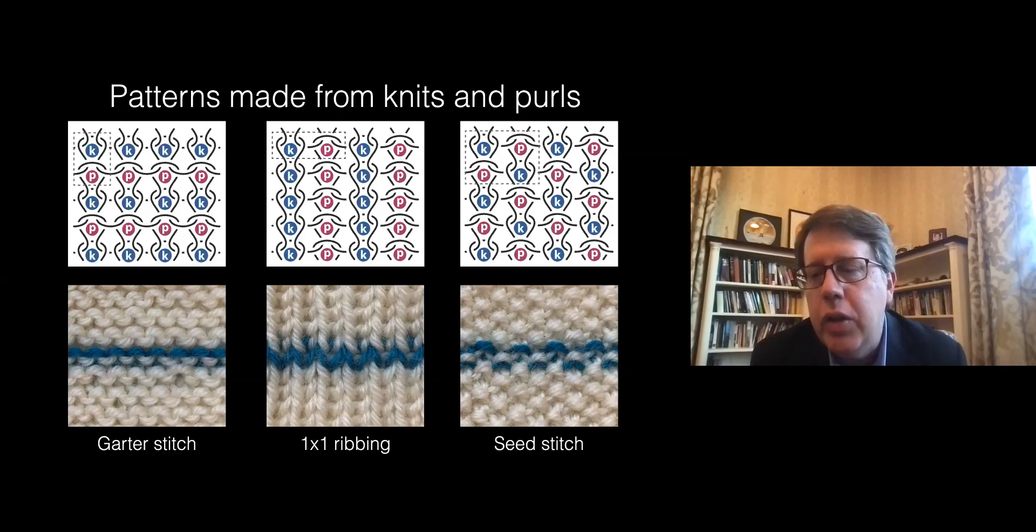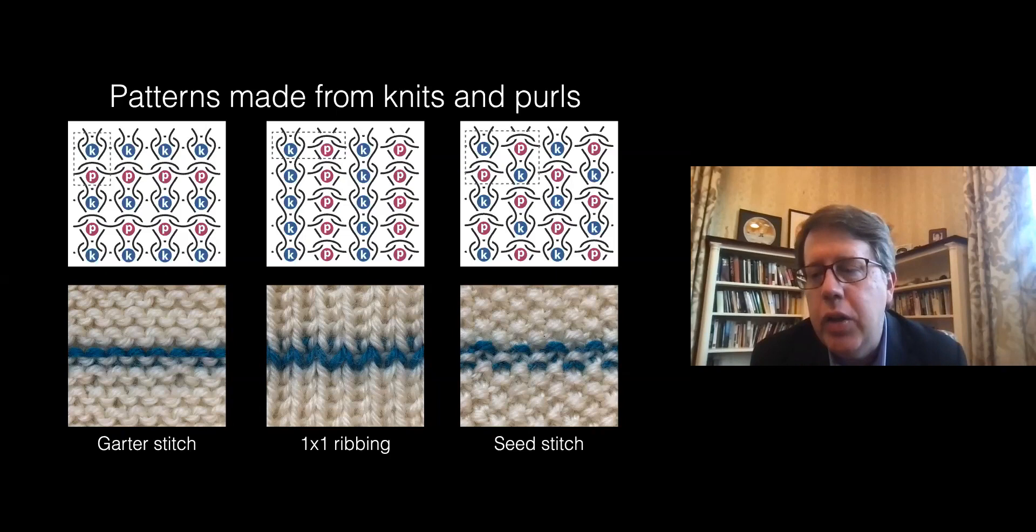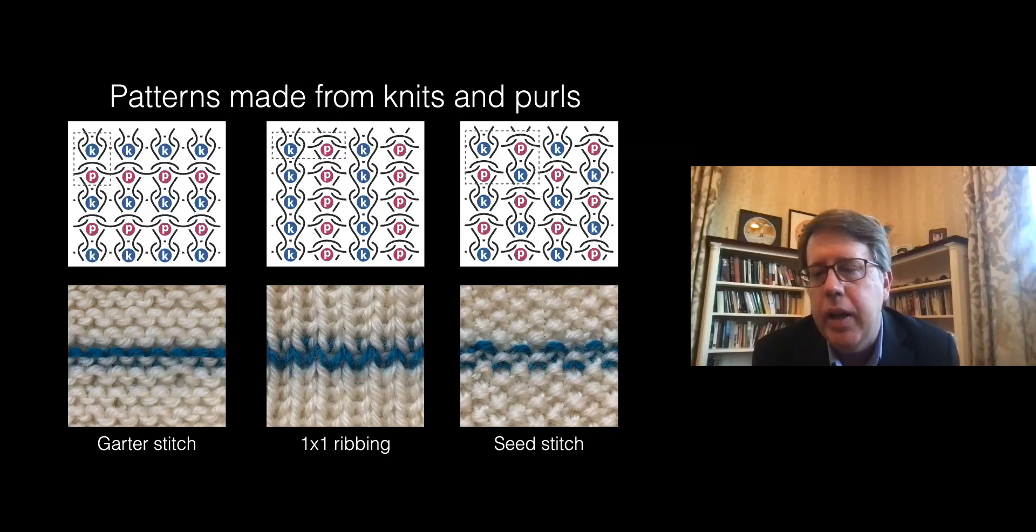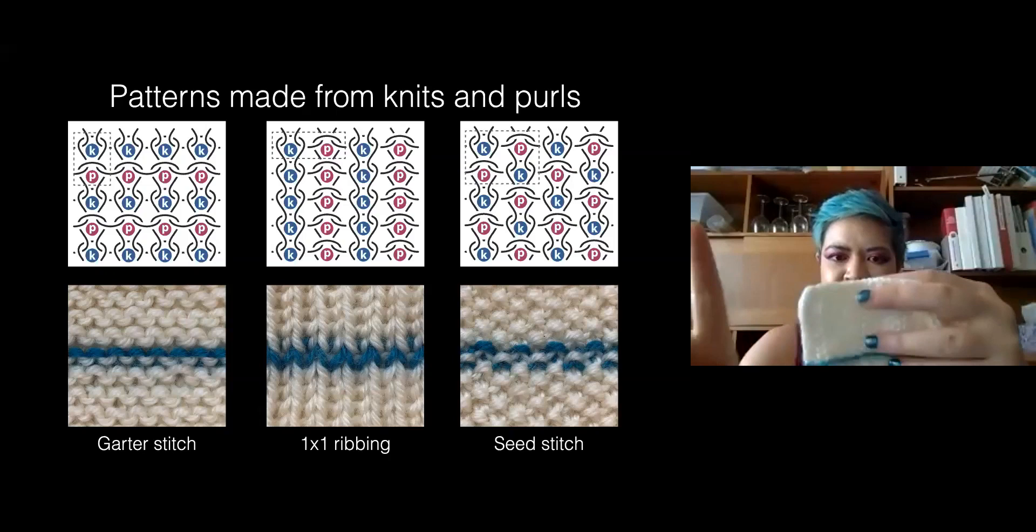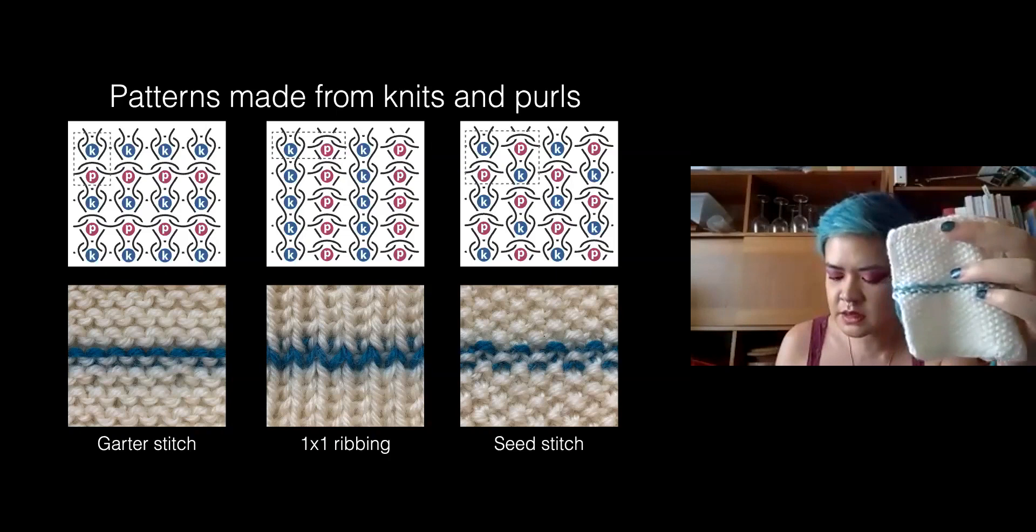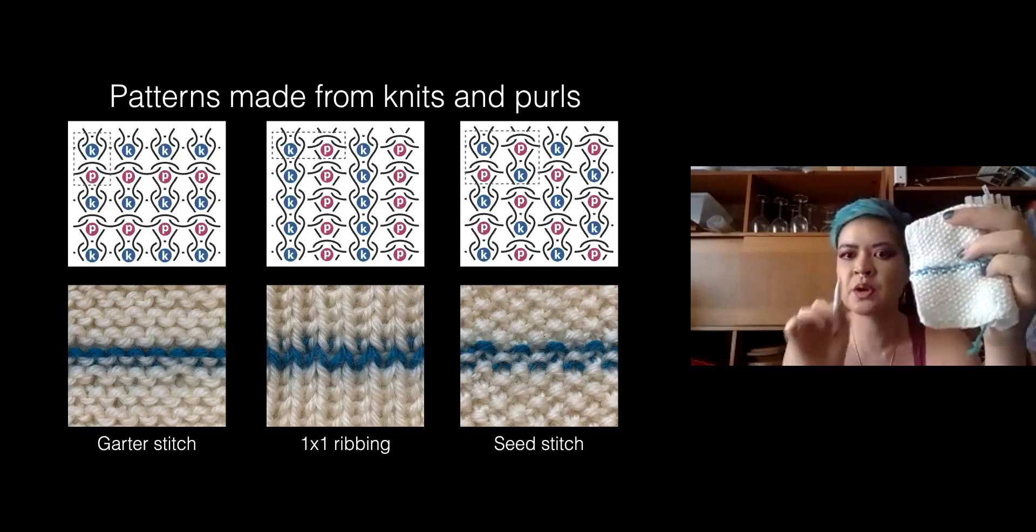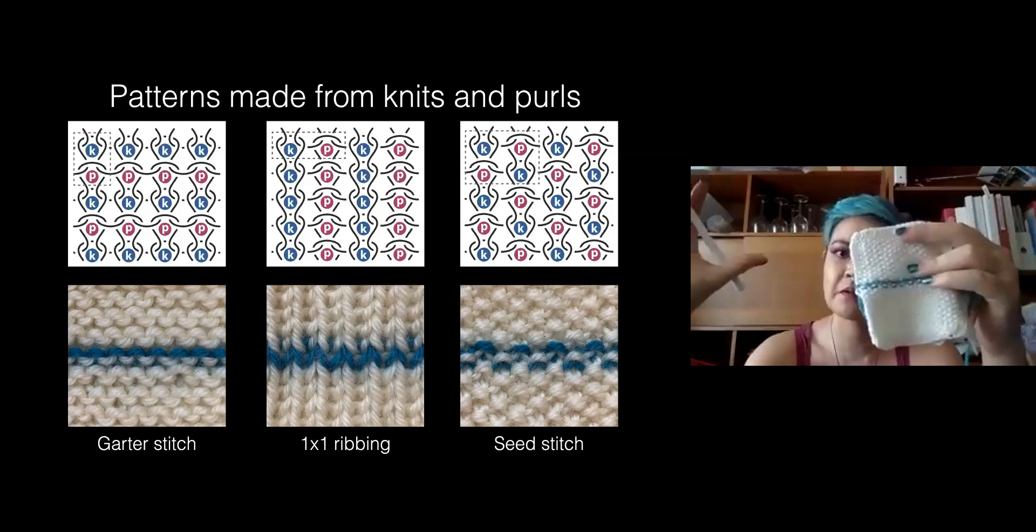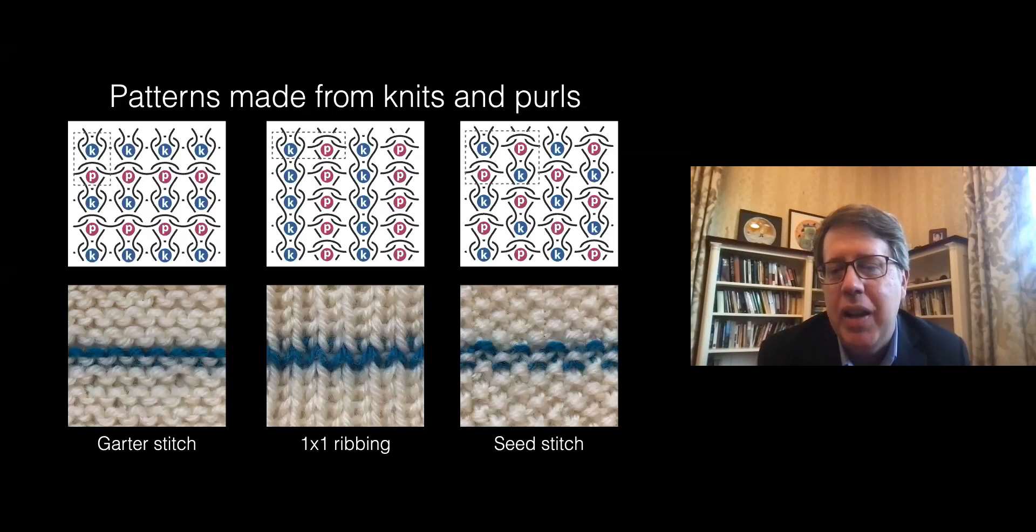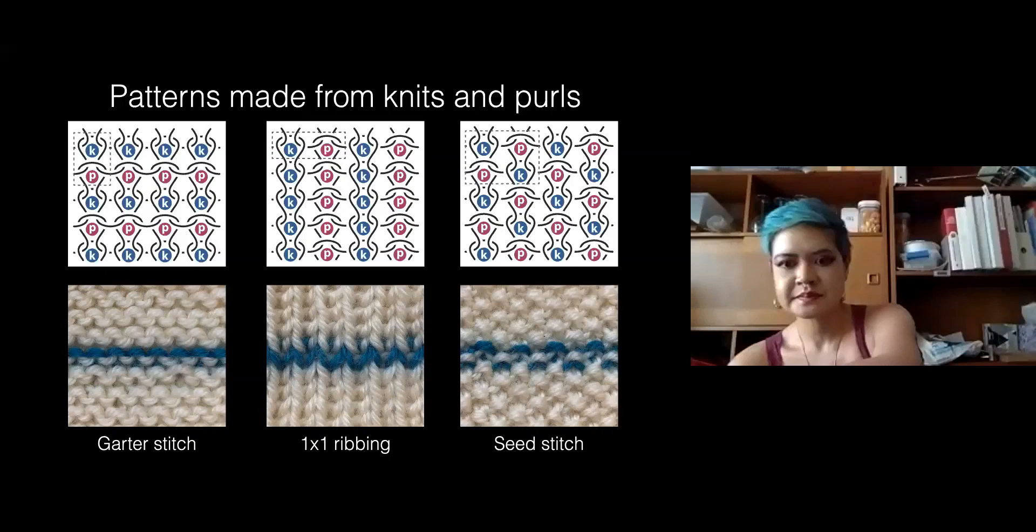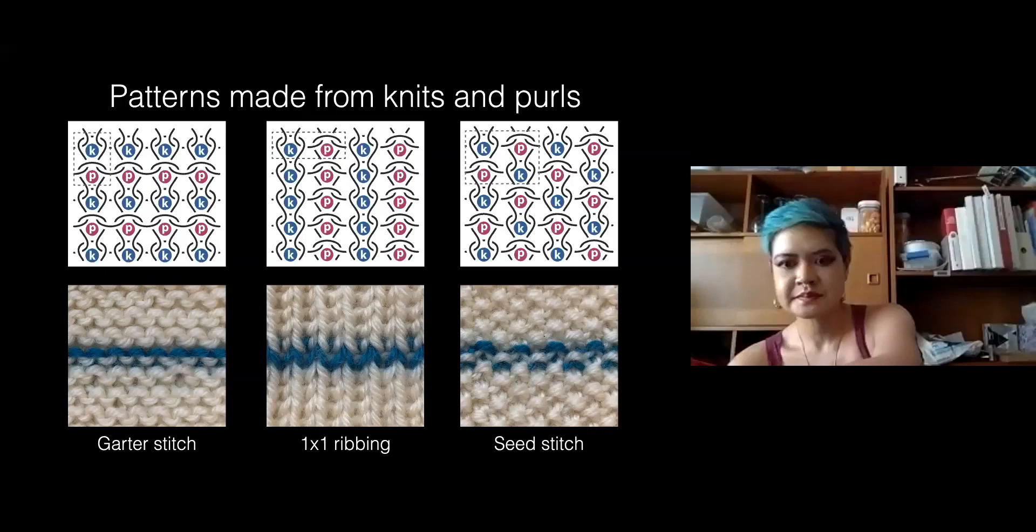If you combine knits and purls in different ways, you get different elastic properties. The first one, garter stitch, is alternating rows of knits and purls. It's much stretchier than stockinette in the vertical direction, less stretchy horizontally. If I take alternating columns instead of rows, I end up with ribbing - really, really stretchy, like an order of magnitude stretchier than stockinette horizontally. Then seed stitch is a checkerboard pattern of knits and purls - very stretchy in one direction. A question about seed stitch symmetry - knits themselves aren't symmetrical under rotations. The design is symmetric, but not the fabric itself.